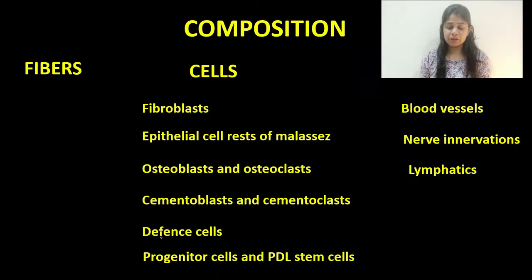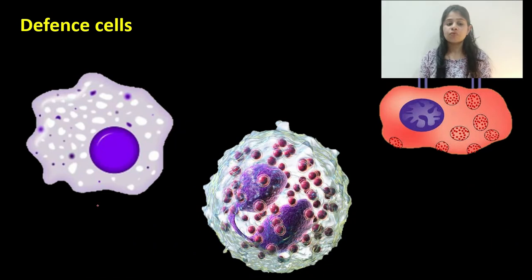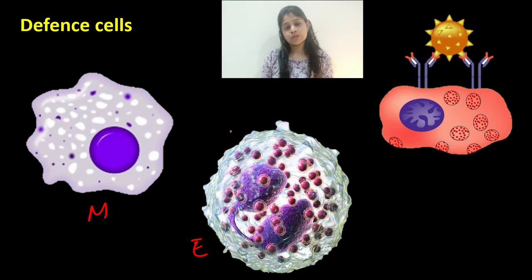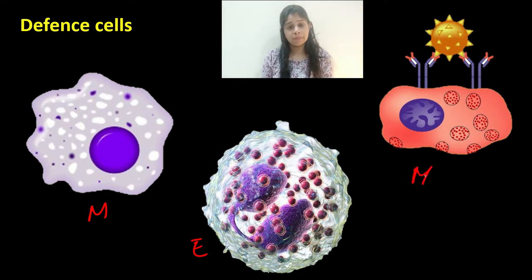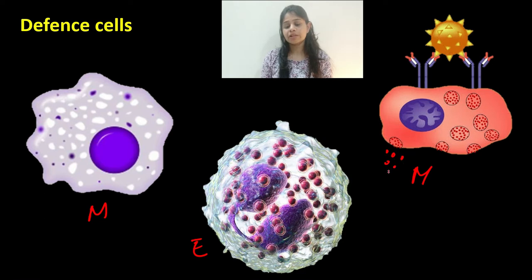The next subset are the defense cells. In the periodontal ligament there are three major defense cells: macrophages and eosinophils, which cause phagocytosis of invading microorganisms and foreign objects. The third type, mast cells, are associated with blood vessels. When activated, they release chemical substances — histamine and heparin — from their vesicles, and they can further cause anaphylaxis.